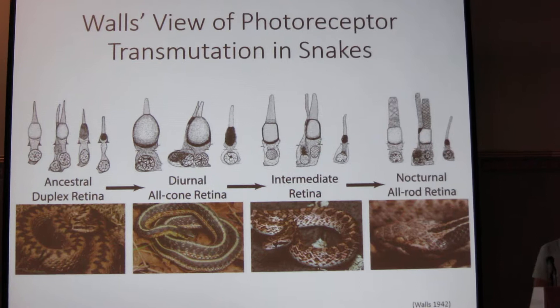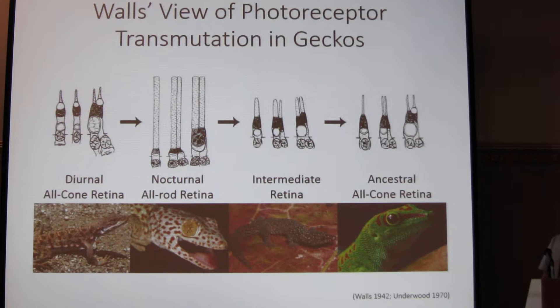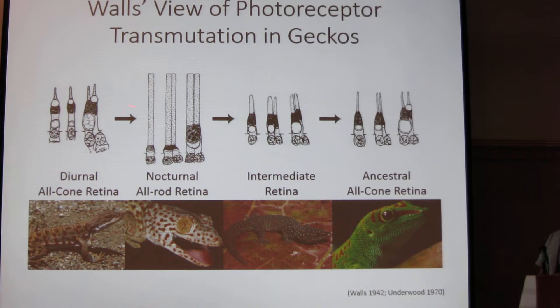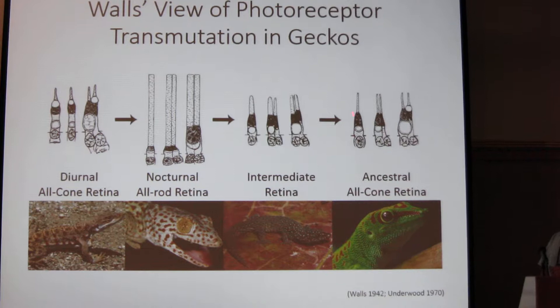In geckos we have a similar pattern, although it's in reverse. Instead we start with that diurnal all-cone retina that we find in most lizards; however in geckos we have an evolution of nocturnal all-rod retinas. Again we have some intermediate retinas, and then reversion back to the ancestral all-cone condition.